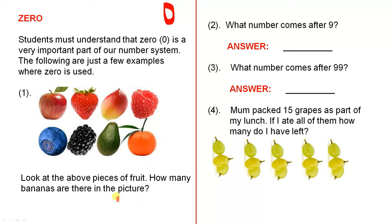Look at the above pieces of fruit. How many bananas are there in the picture? You look very carefully at those pieces of fruit there, and guess what? You will answer, there are no bananas. In other words, 0 is the answer. Because there are no bananas, 0 is the answer.